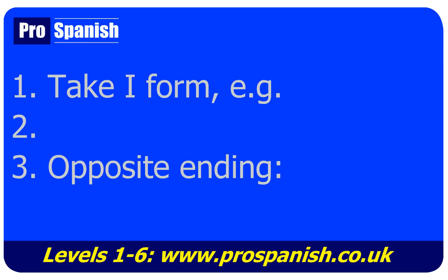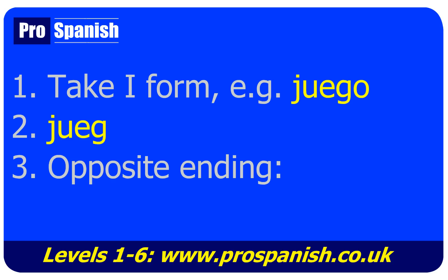Let's take an AR verb. For example, 'you play' subjunctive. Start with 'I play' — JUEGO. Take off the O, and normally 'you play' ends in AS — JUEGAS. So take the opposite ending, as though it's not AR but ER/IR, which would be ES. So JUEGES is 'you play' subjunctive.